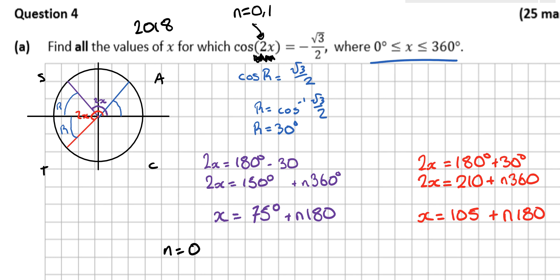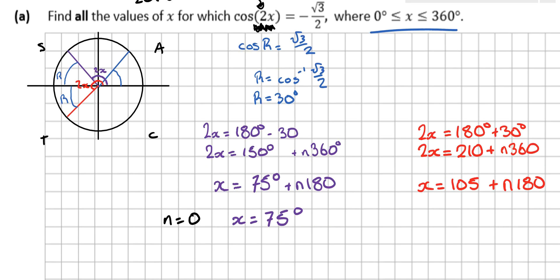When n equals 0, x would equal 75. 0 times 180 is 0. When n equals 1, I'd get 75 plus 180, which is 255 degrees. So x equals 255 degrees. Over here when I go n equals 0 and n equals 1 I'll get x equals 105 degrees and then add on 180, x equals 285 degrees if I used n equals 1. So it would be 105 plus 180.